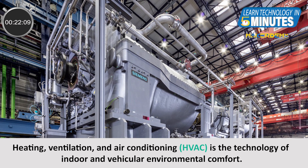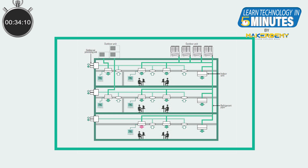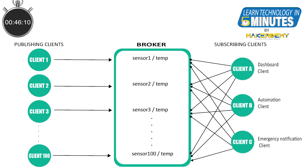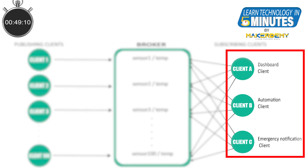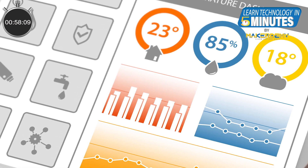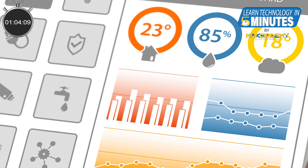Let us again look at the HVAC factory example application we covered in the Last Will and Testament video. Let us imagine that a similar system is deployed in a large office space where we have deployed sensors to measure temperature, humidity, and pressure of individual rooms. There might be hundreds of sensors constantly publishing sensor values to the broker. You will only need a few subscriber clients to handle all the operations of the HVAC, like a dashboard client, an automation client, an emergency notification client, and so on.